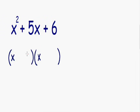Now we have to figure out what goes on the right side of each parentheses. The way we find this out is we need to pick two numbers that multiply and give us positive 6, and those two numbers also need to add or subtract and give us positive 5.